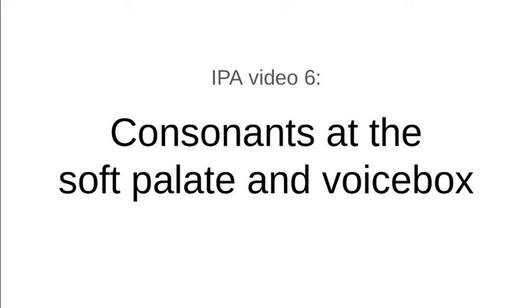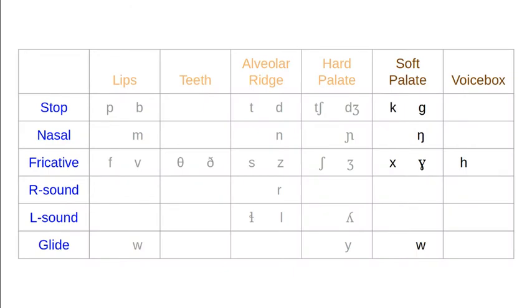This is the last video on consonants. We're going to look at some sounds produced at the soft palate and in the voice box, finishing off our review of English consonants — and then some extras. In English, we have four sounds produced at the soft palate and one produced at the voice box. We've actually covered one of these sounds already — the W sound. It'll be a total of seven sounds covered in this video.